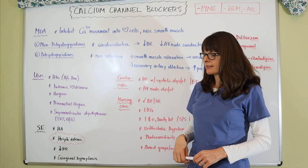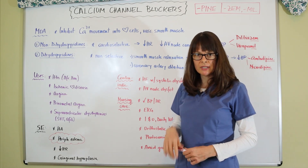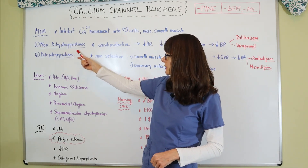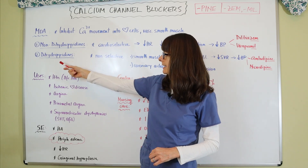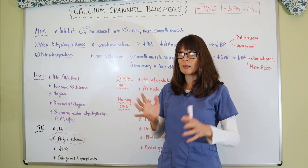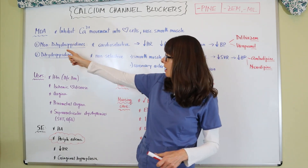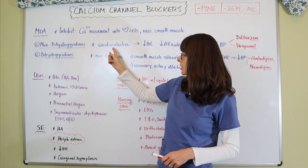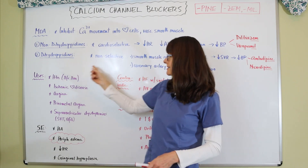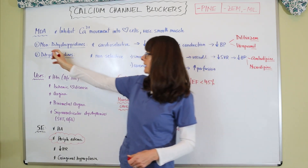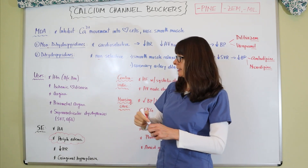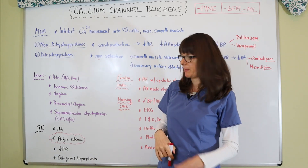There are two different types of calcium channel blockers: the non-dihydropyridines and the dihydropyridines. The non-dihydropyridines are cardioselective, while the dihydropyridines are non-selective. The 'non' in both terms don't match up, so just remember that they don't match and you'll be fine.